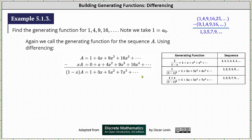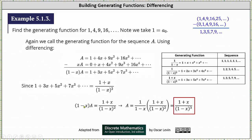From here, because we know the generating function for the series on the right, we can perform a substitution. We know that 1 plus 3x plus 5x squared plus 7x cubed plus ... equals the generating function 1 plus x divided by the square of the quantity 1 minus x. Performing the substitution, we now have the equation: 1 minus x times a equals the quantity 1 plus x divided by the square of the quantity 1 minus x.